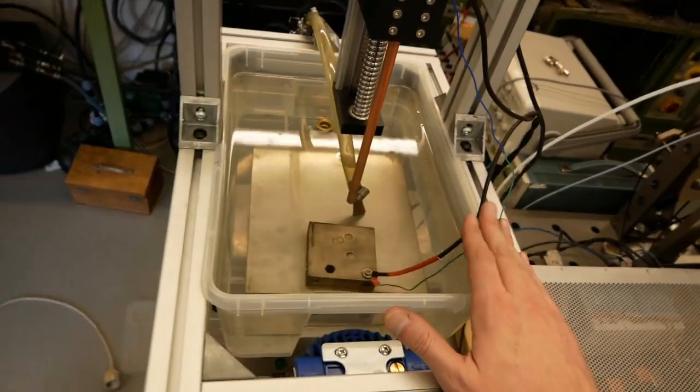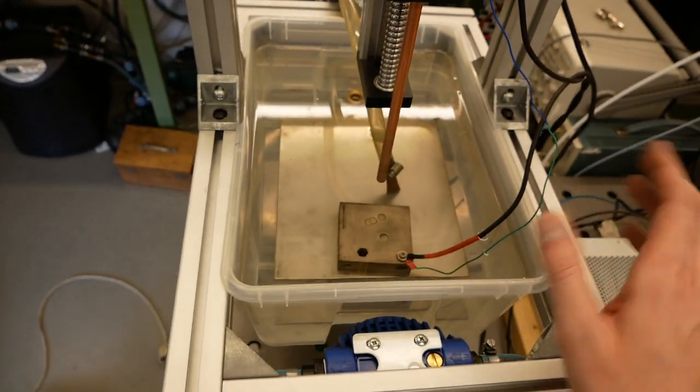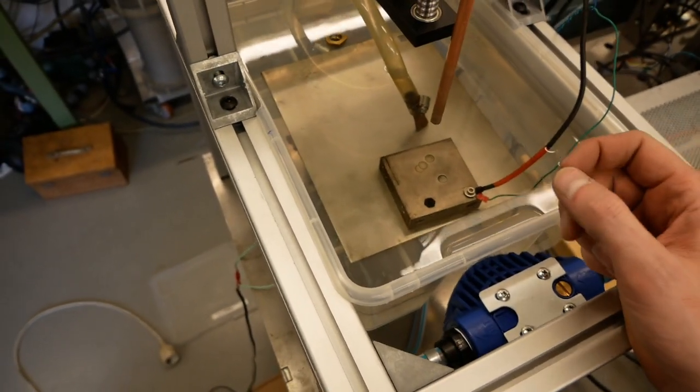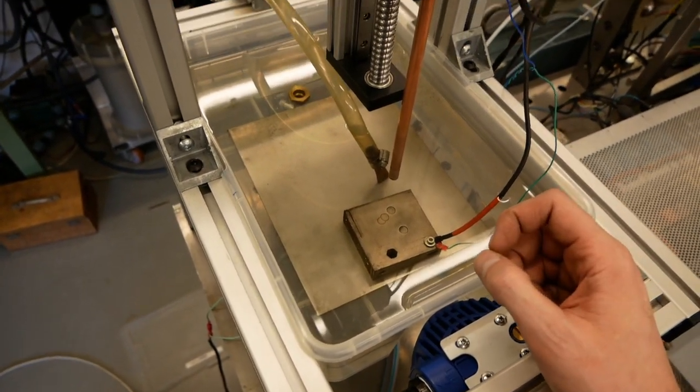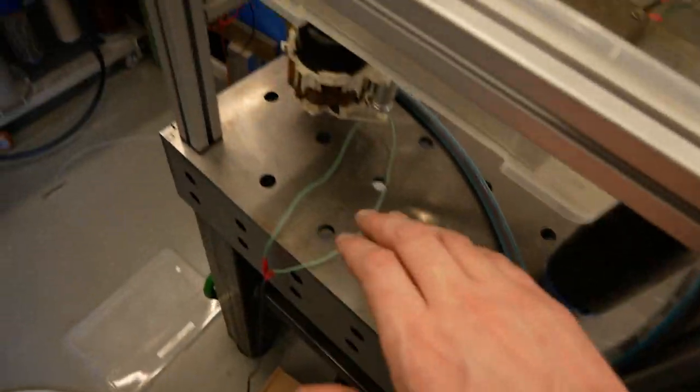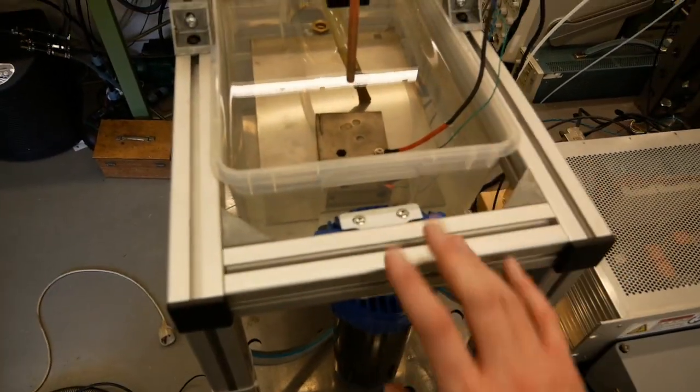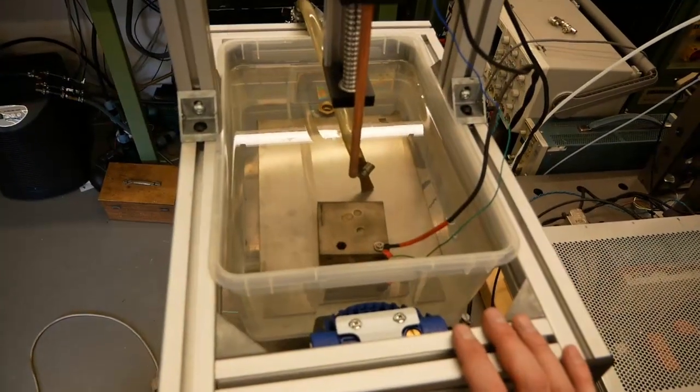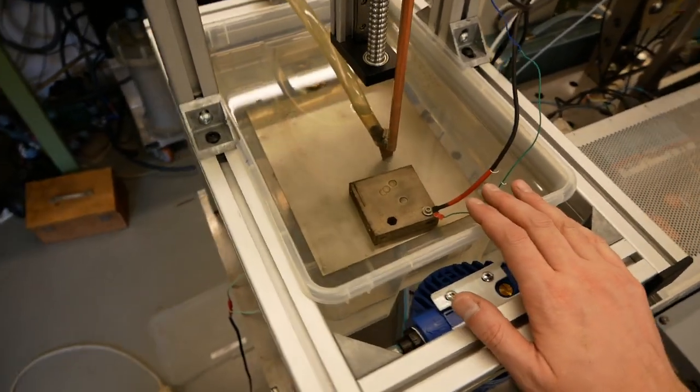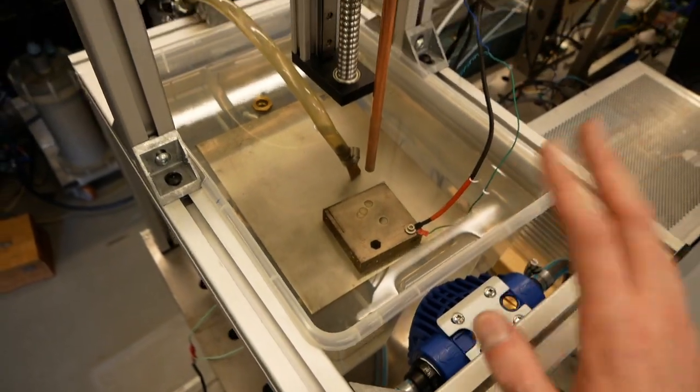Also, you might notice that I am actually doing die-sinking with water. There are no industrial machines that use water; all machines use special EDM die-sinking oil. Die-sinking oil gives a lot of better properties to the cut, better surface finish and things like that. But I did not have the oil and I had water filters and a dishwashing pump. I had them already lying around, so I was able to really quickly build this setup without having to purchase a lot of other stuff which I would have had if I would have used oil instead. So this is water, it's not optimal, but it's already working quite nice.